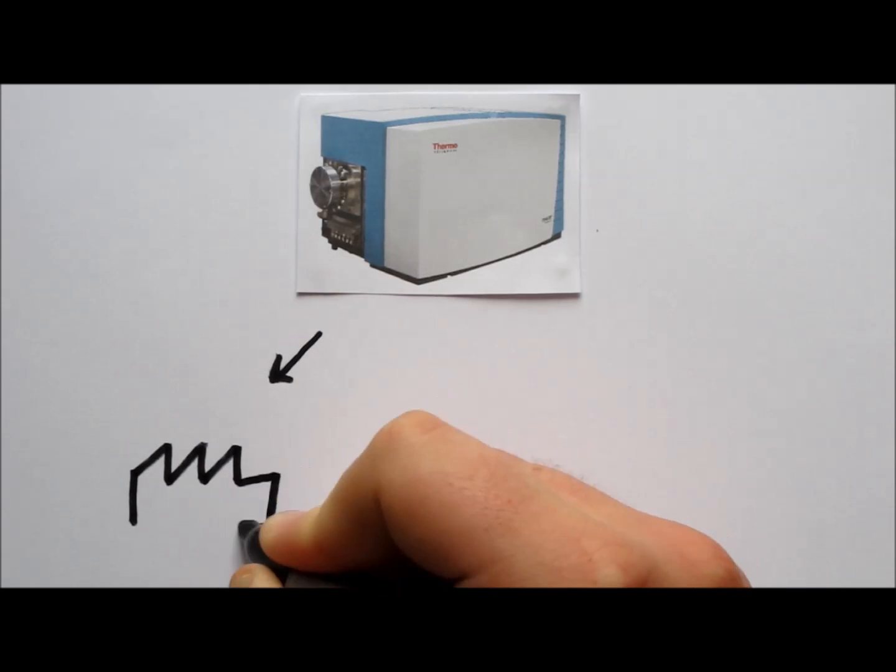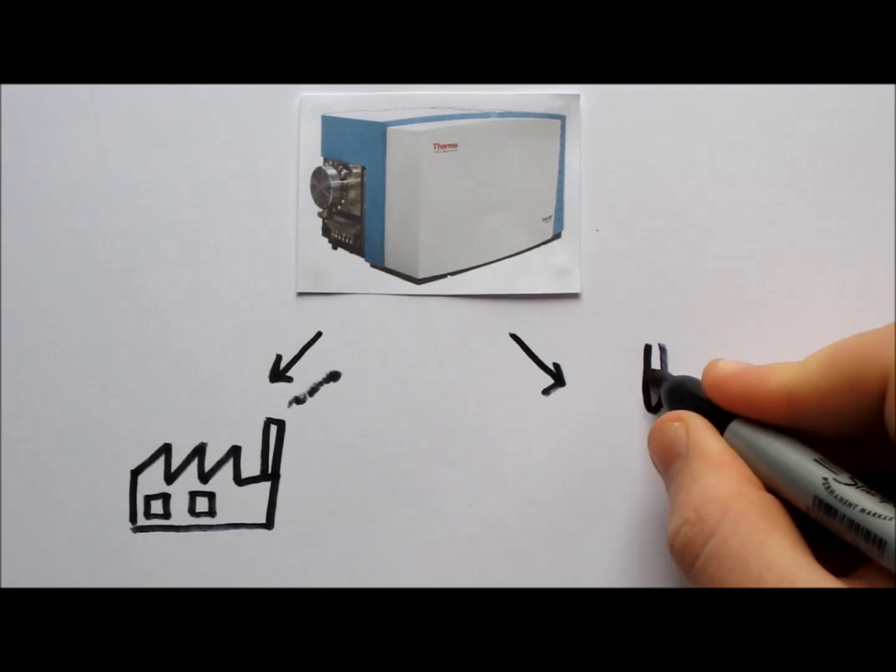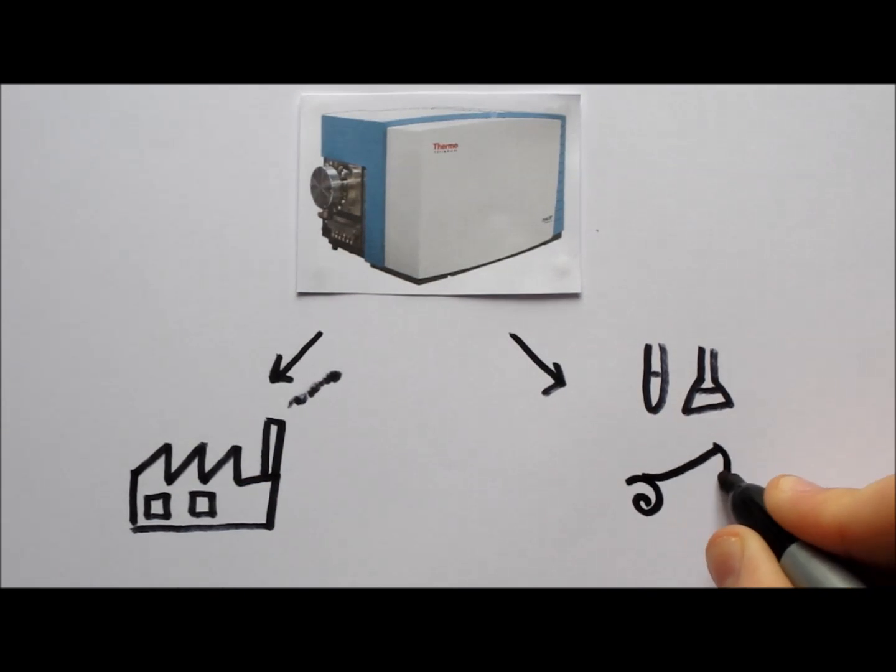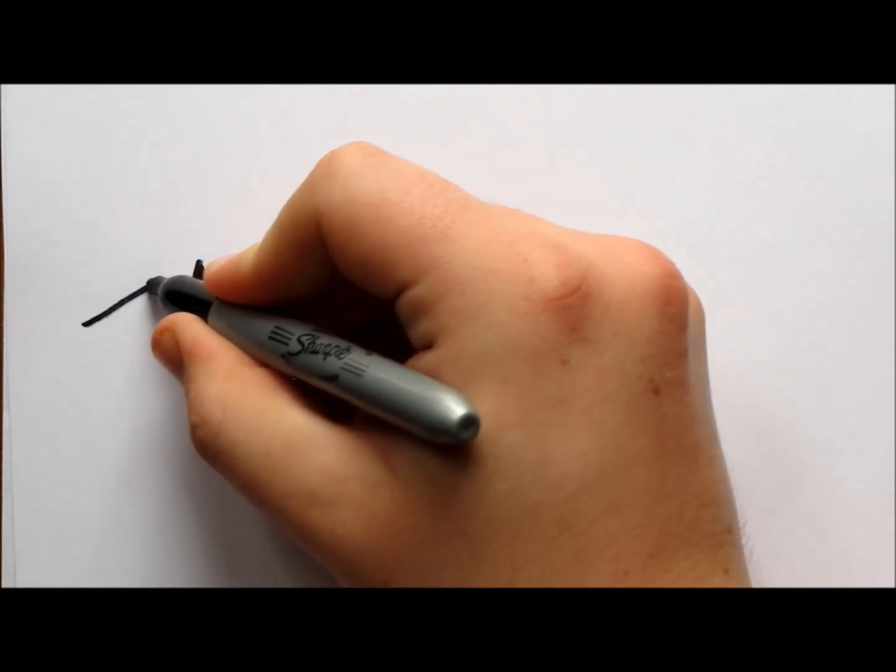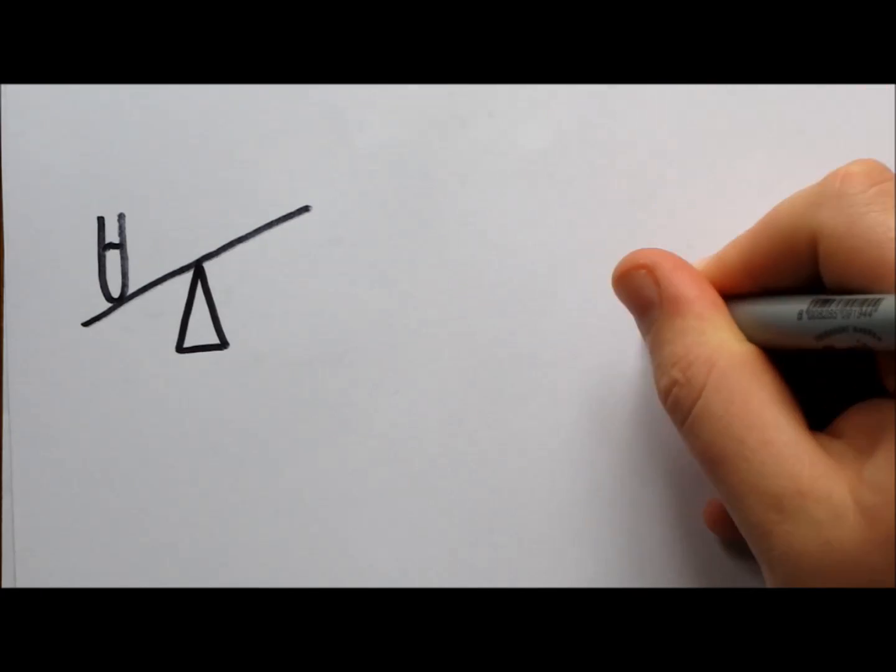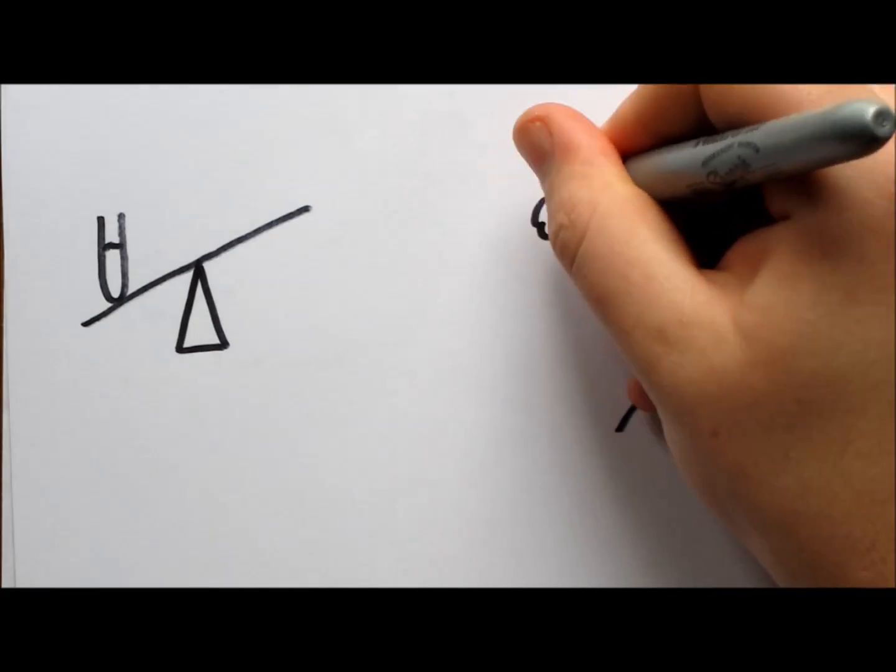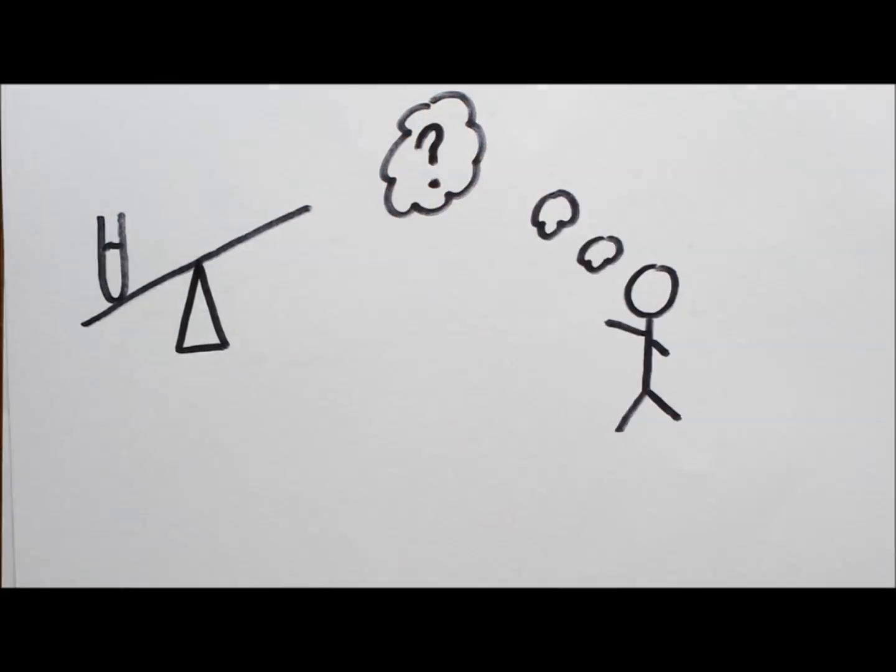Mass spectrometry is an analytical tool of enormous importance for the sciences and is widely used in many areas of industry and academia. In its most simple use, mass spectrometry is simply a way to accurately determine the mass of a compound and is commonly used to help identify different molecules.